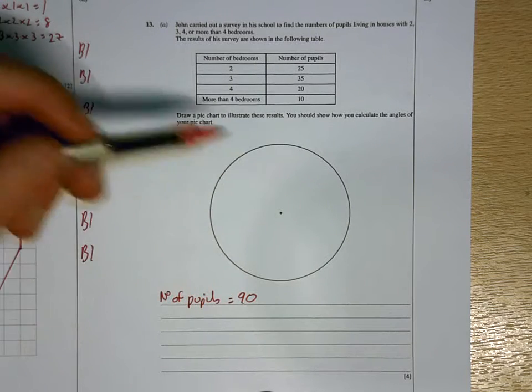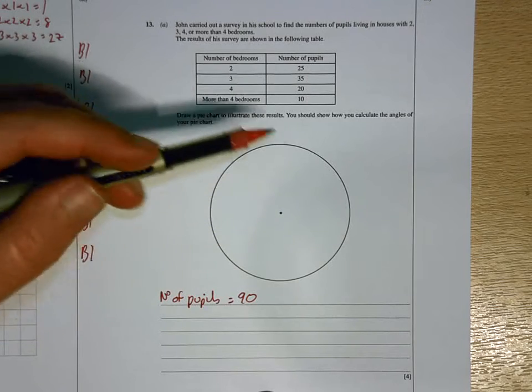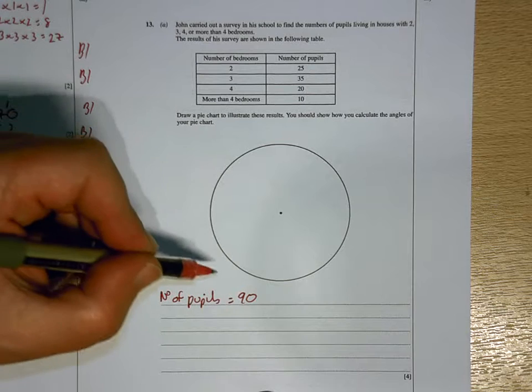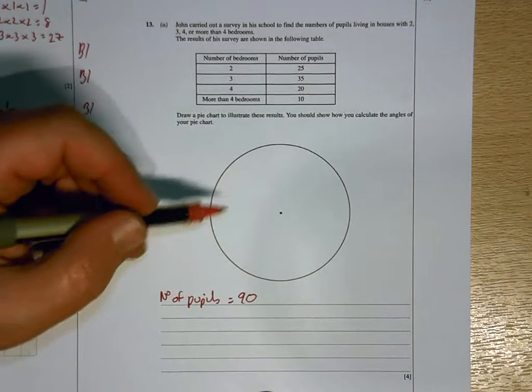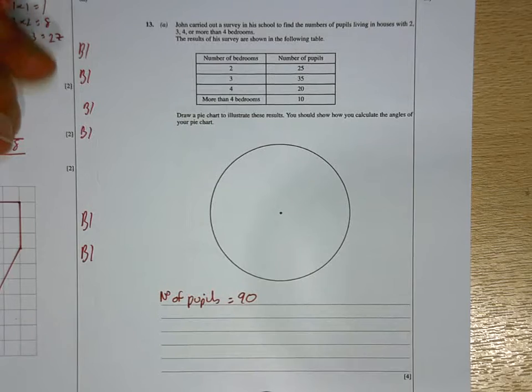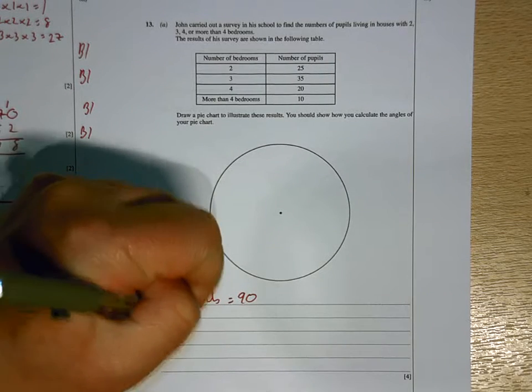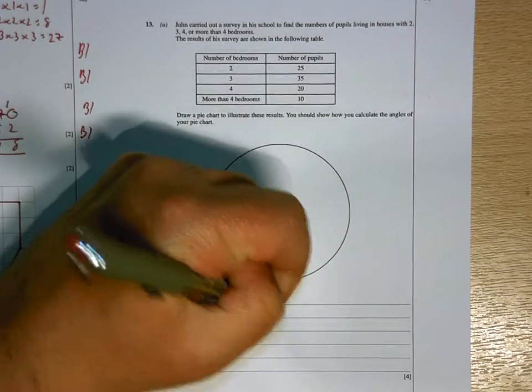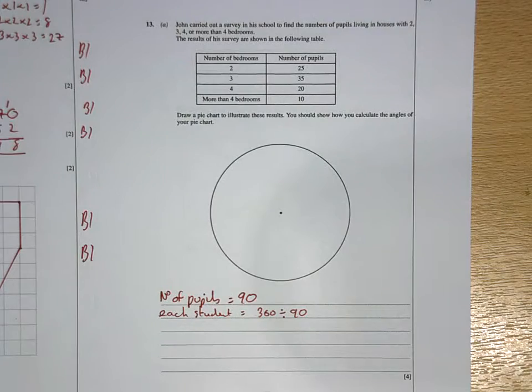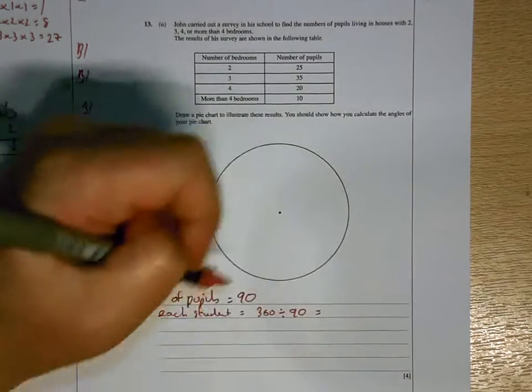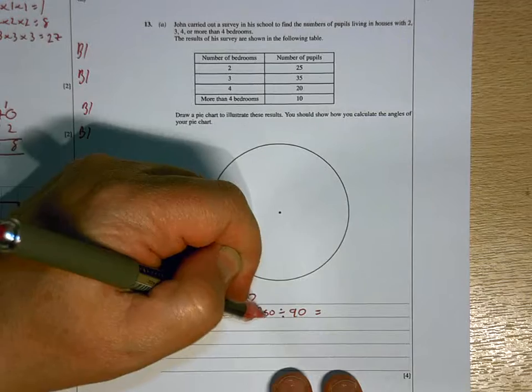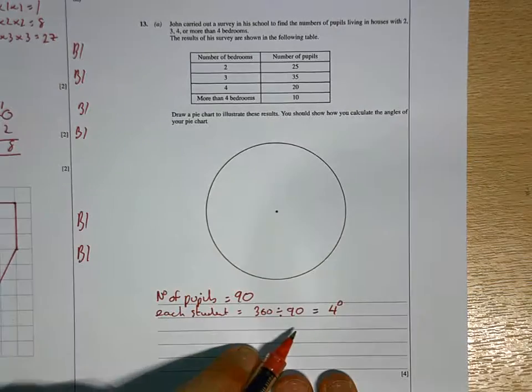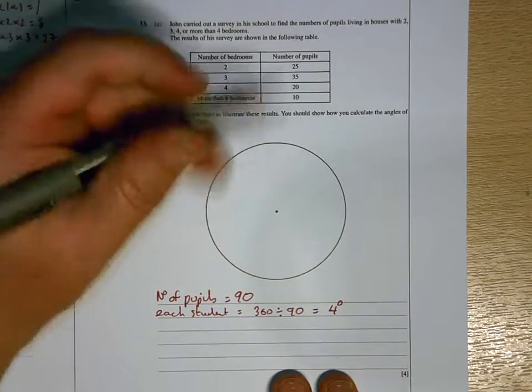I've added up there that the total number of pupils that we've got is 90, and you need to know that a pie is a circle, and a circle has 360 degrees of angle within it. So what I now need to do is to divide those 360 degrees up for my 90 students. So each student gets 360 divided by 90. Now, 360 divided by 90 is the same as 36 divided by 9, which is 4 degrees.